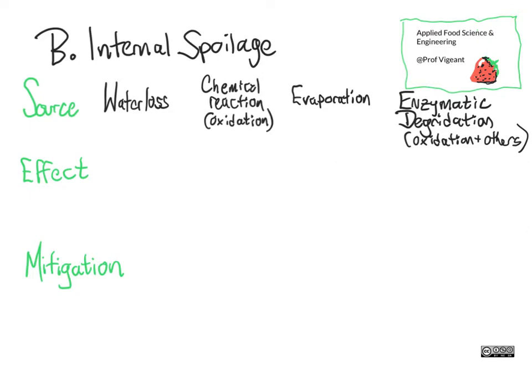So, water loss. That's pretty much what was happening to the pepper I showed you. Obviously there's less water, but we need to zoom in and look at the cells that make up a plant to understand what less water actually means. These things I'm drawing here represent cells, and there's a little bit of interstitial space between them that might be taken up with connective material or fluid. This is on the inside of our fruit or vegetable.